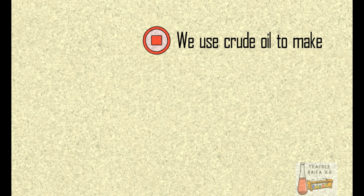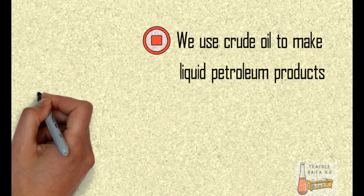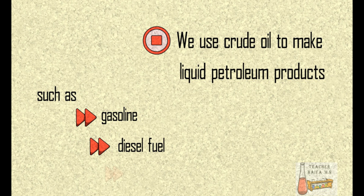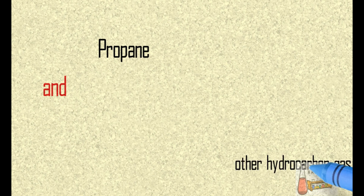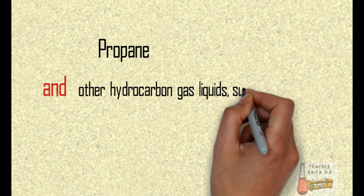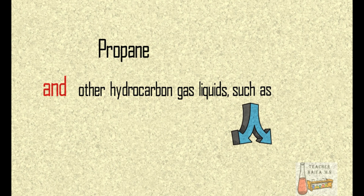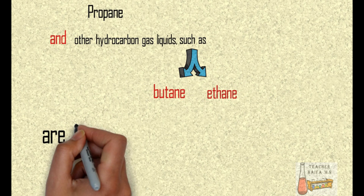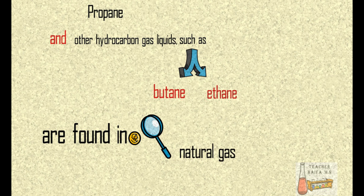We use crude oil to make liquid petroleum products such as gasoline, diesel fuel, and heating oil, as well as propane and other hydrocarbon gas liquids such as butane and ethane, which are found in natural gas and crude oil.